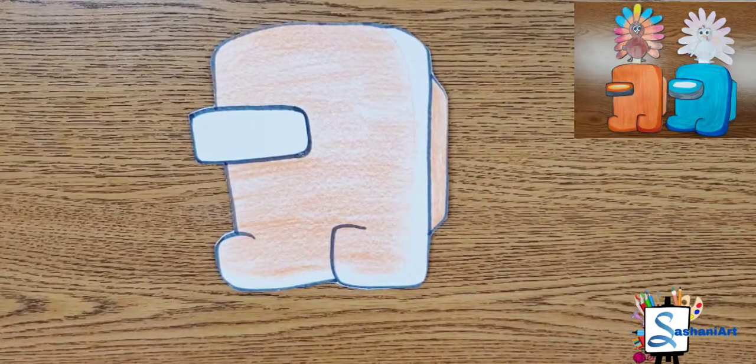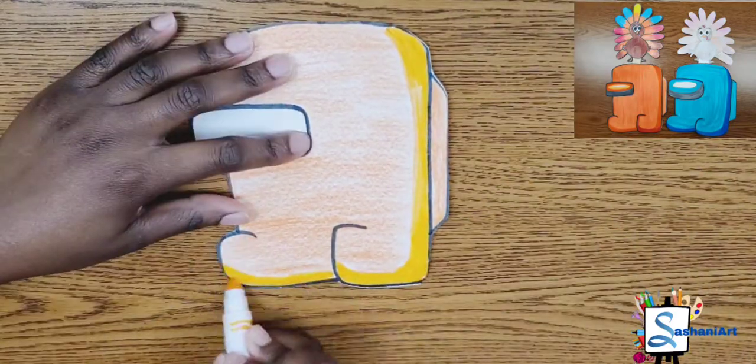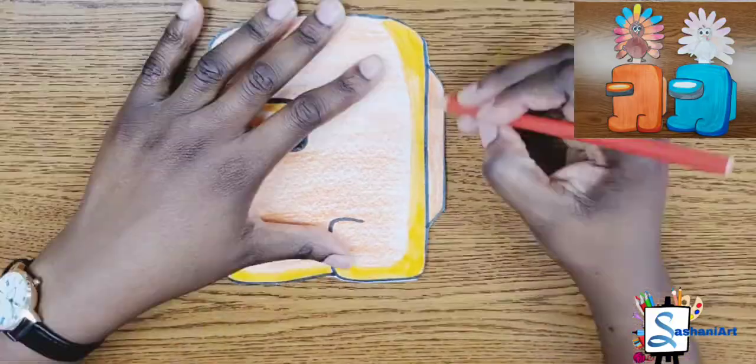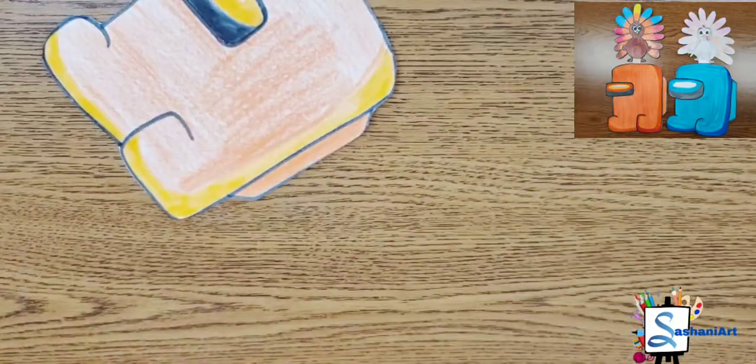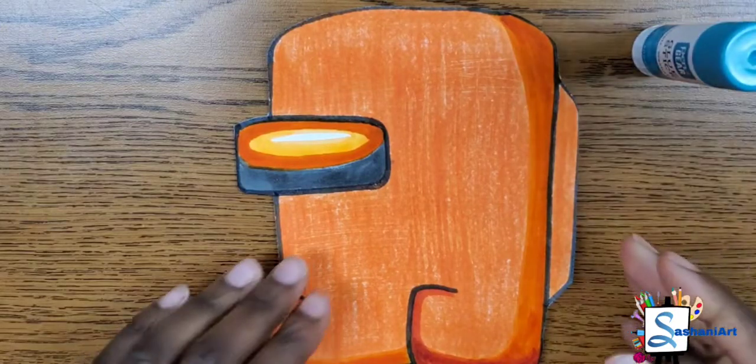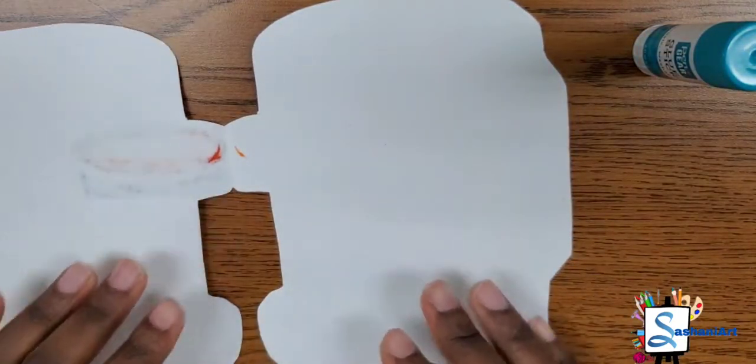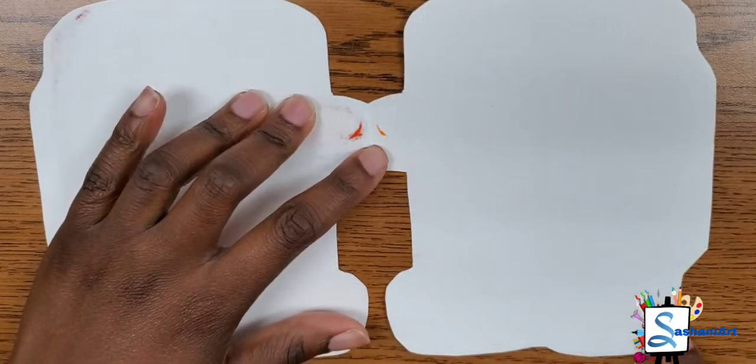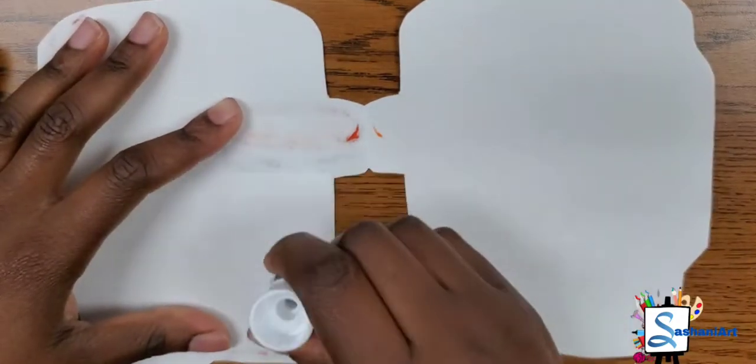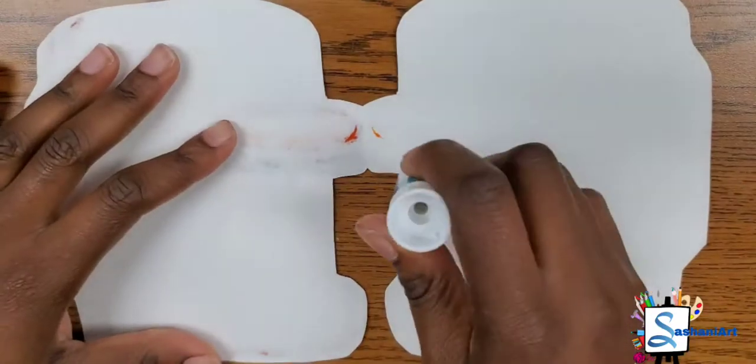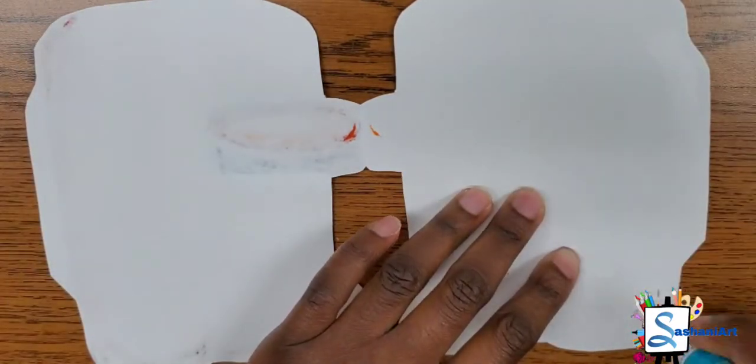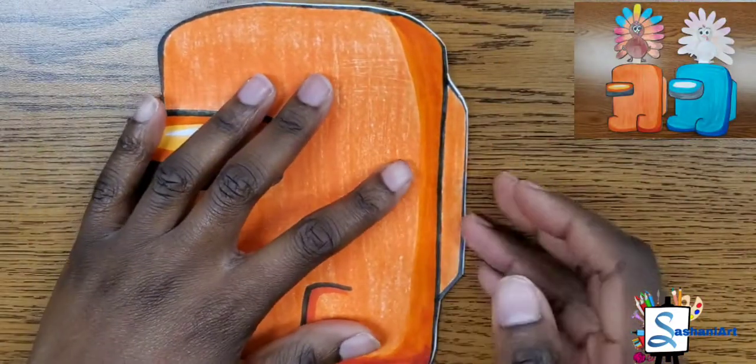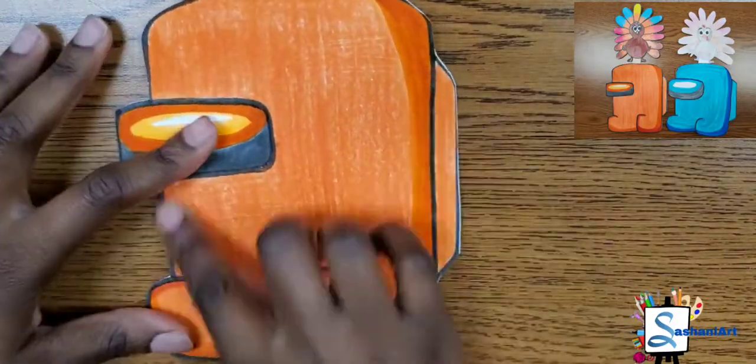Grab your glue. You're going to open your Among Us drawing and we're going to glue only the sides of our artwork. Glue as close to the edge as possible. Do not glue in the middle because if you glue inside the middle, then your turkey puppet won't be able to fit inside of it. After you add your glue, put it down and then rub your hands gently, massage your paper using your hands so that the glue can hold firmly.